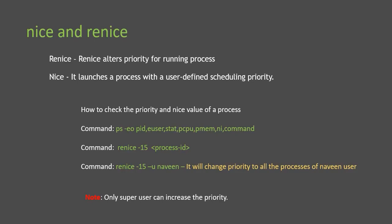The NICE command is used when you are launching and executing a new command and want to set a priority like -10 at that time. You cannot use the NICE command for existing processes already running with some NICE value. For existing running processes, you use the RENICE command to change their current NICE value.